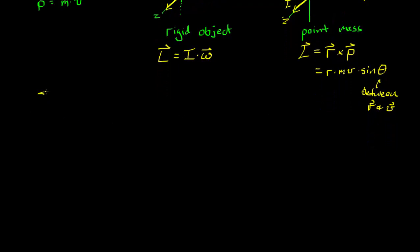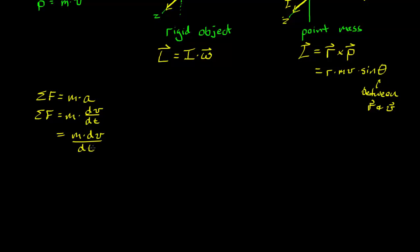That leads us to Newton's second law. For linear motion: net force is mass times acceleration, and acceleration is the time derivative of velocity. So we get mass times the derivative of velocity with respect to time, which is the derivative of momentum with respect to time. The net external force is the rate of change of momentum — this is actually how Newton originally wrote it.